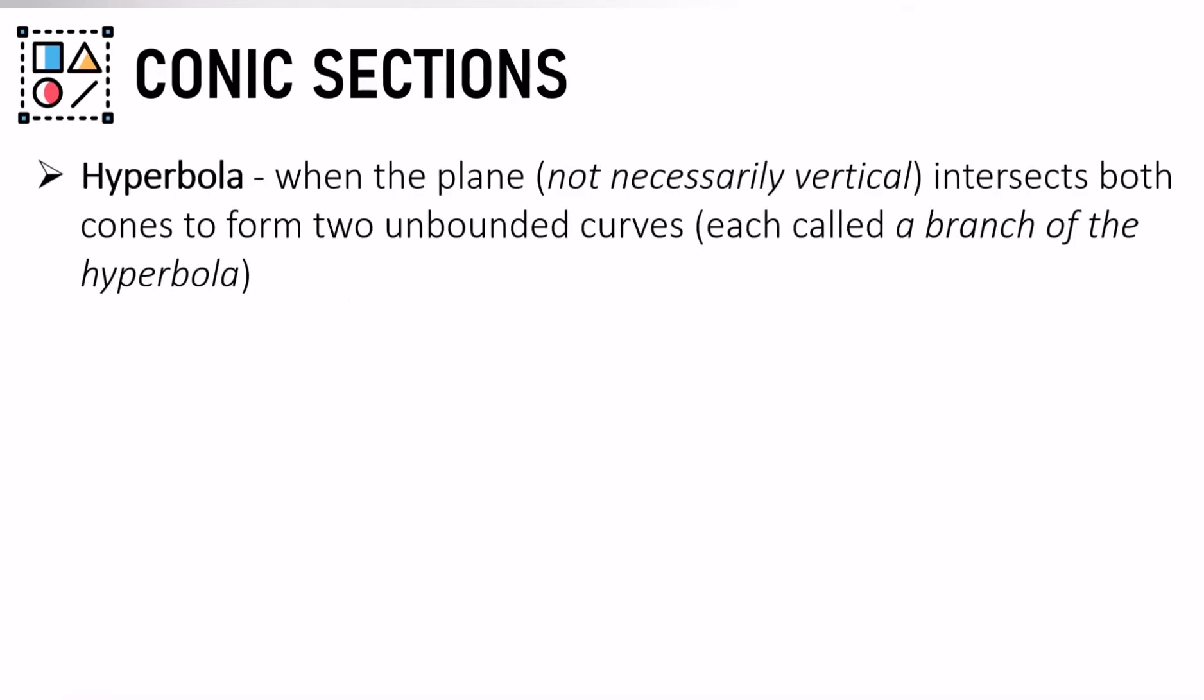Hyperbola, when the plane not necessarily vertical intersects both cones to form two unbounded curves. So this one. So this is what hyperbola looks like. You have two hyperbolas.